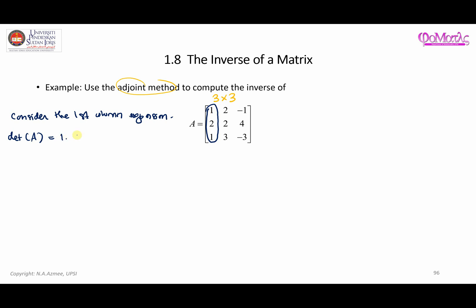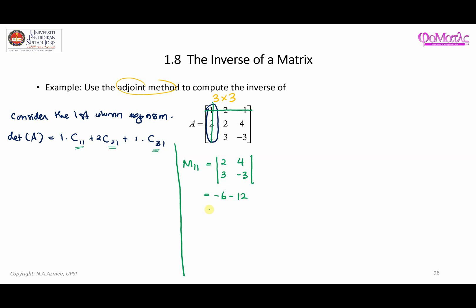The determinant of A is: the entry in position (1,1) times cofactor C₁₁, plus the entry in position (2,1) times cofactor C₂₁, plus the entry in position (3,1) times cofactor C₃₁. To find C₁₁, we need minor M₁₁, obtained by deleting the first row and first column. That submatrix gives a determinant of negative 6 minus 12, which is negative 18.